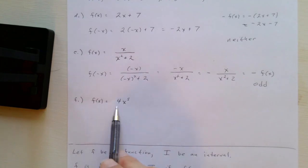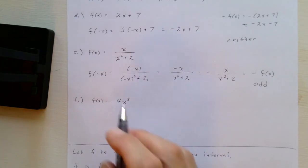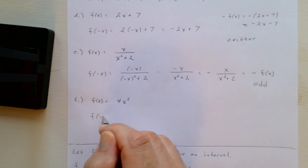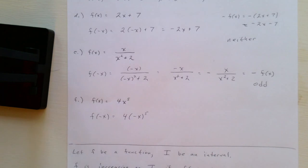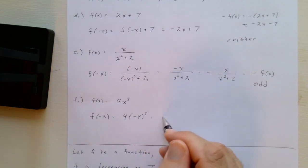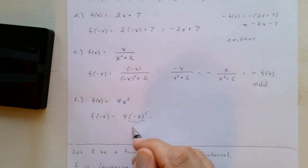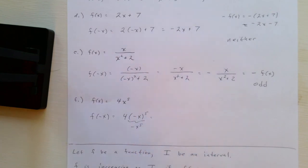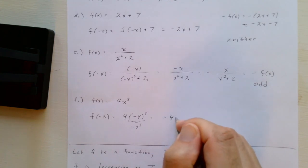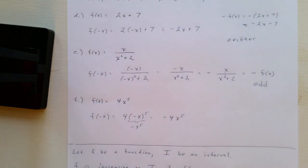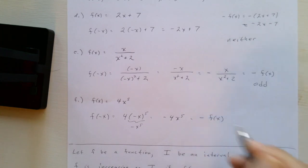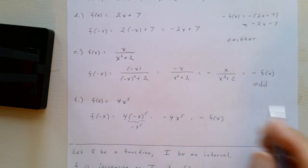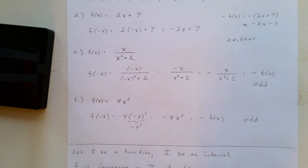Finally, for f(x) = 4x⁵, f(−x) = 4(−x)⁵ = 4·(−1)·x⁵ = −4x⁵, which equals −f(x). So this function is also odd.